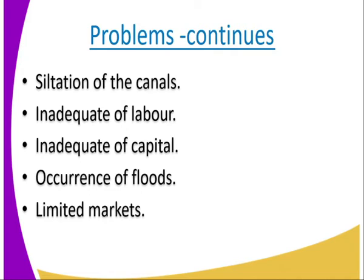There is inadequate labor — most of these irrigation schemes require manual labor, which is not readily available. Then there is inadequate capital, which is not readily available either, and farmers depend on advances from cooperatives. There is also the occurrence of floods — for example in the Perkerra irrigation scheme — which result in destruction and death of crops.